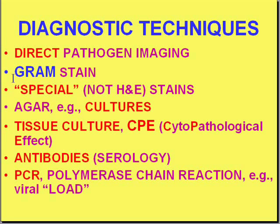Regarding diagnostic techniques: one way to diagnose pathogens is to directly look at them, as we've seen in parasite imaging. With bacteria, we have gram staining, and there are other stains for bacteria not responsive to gram stain, such as the acid-fast stain. Bacteria in particular can be cultured and relied upon to produce various growth patterns for identification. If an organism cannot be cultured, it can be placed onto human or other cell types to observe the effect — called a cytopathological effect or CPE.